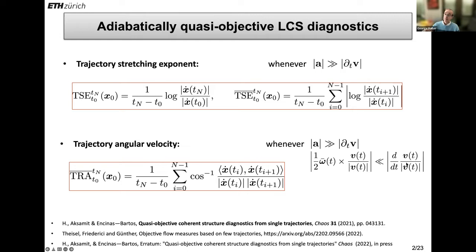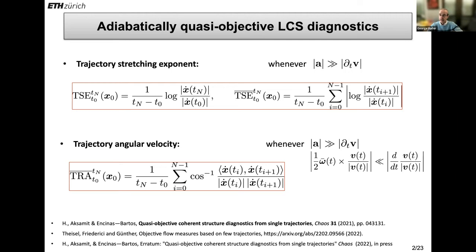Compare that to the actual rotational speed of that vector. There should be an order of magnitude difference. These are things that you can verify offline on models. Obviously, you cannot verify them from trajectory data because you don't have the velocity. But if you have theories or models with velocity data from a particular region, and you find that these assumptions are okay for that ocean region in general, then these diagnostics are applicable and they are quasi-objective.